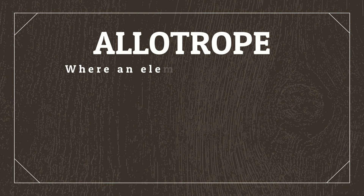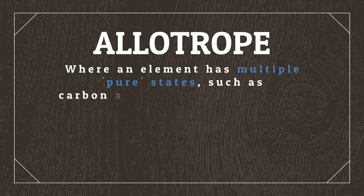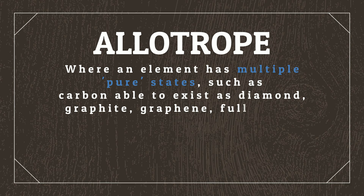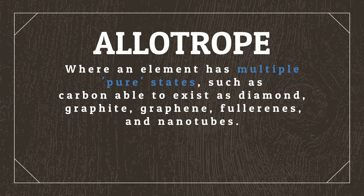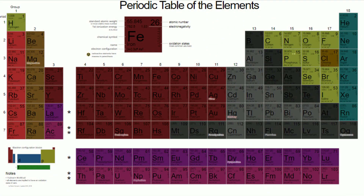Elements may also exist as allotropes, which is where an element has multiple pure states, such as carbon, able to exist as diamond, graphite, graphene, fluorenes, and nanotubes. Our real-life universe is made up of 118 known elements, organized into the periodic table, which is firmly set based on the atomic weight of each element.